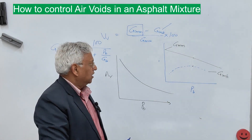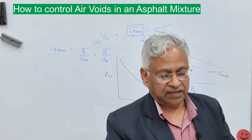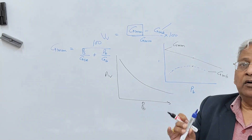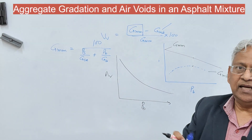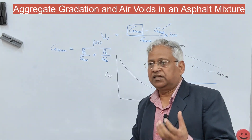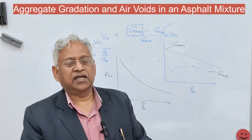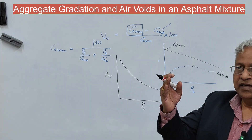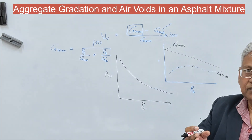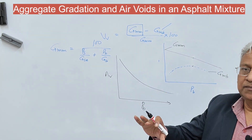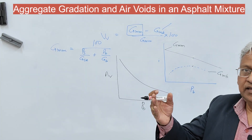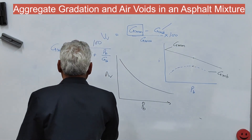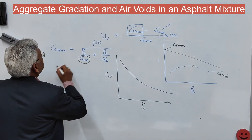The second method of controlling air voids is aggregate gradation — specifically the amount of coarse aggregate and fine aggregate. As per Indian standards, fine aggregate is material passing the 2.36 mm sieve; as per MS-2, it is passing 4.75 mm. If you take a finer aggregate gradation, air voids will reduce; for a coarser gradation, air voids will increase.